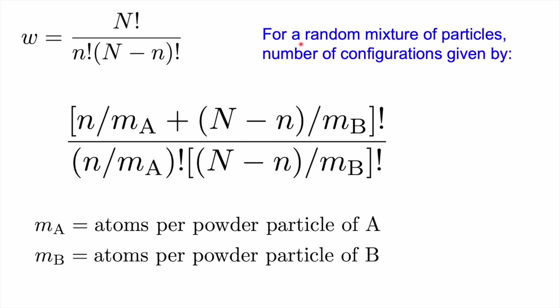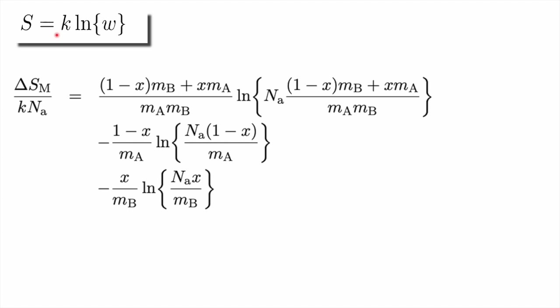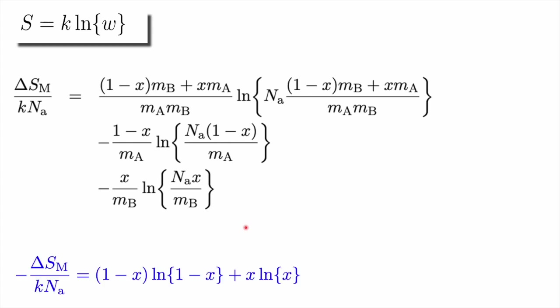For a random mixture of particles, we simply take the logarithm of this to find the configurational entropy of mixing of powders. If I take the logarithm and multiply by k, I get the entropy of mixing of particles in this form. And if you set the particle size to just one atom, this reduces to the normal equation we have for the configurational entropy of mixing.